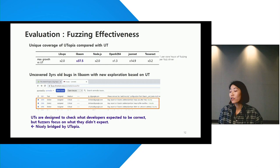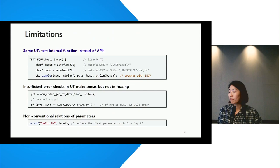UTs are designed to check what developers expected to be correct, but fuzzers focus on what they didn't expect. The result shows that these are nicely bridged by Utopia.